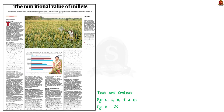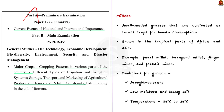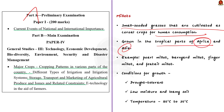The next news article from the text and context page talks about millets, their nutritional value, and how processing of millets affects nutritional value. The syllabus relevant to this article is highlighted for reference. Millets are a group of small-seeded grasses cultivated as cereal crops for human consumption, particularly grown in the tropical parts of Africa and Asia. Some common varieties include pearl millet, barnyard millet, finger millet, and foxtail millet. These crops have been cultivated in the Indian subcontinent for thousands of years, and India is currently the largest producer of millets globally.